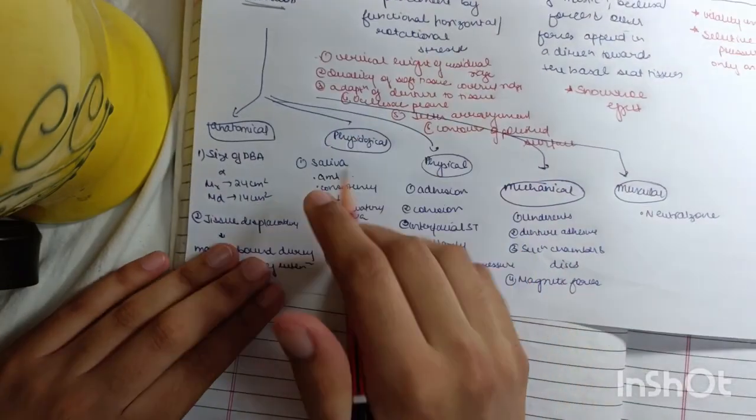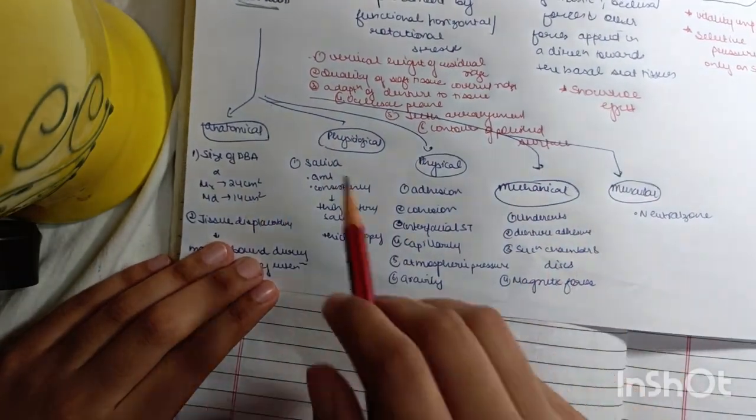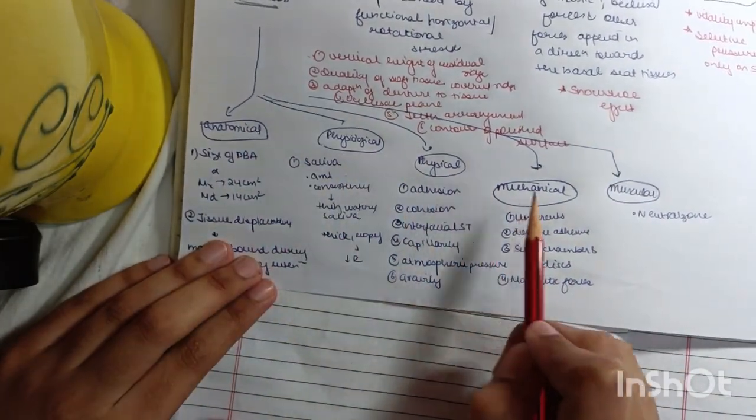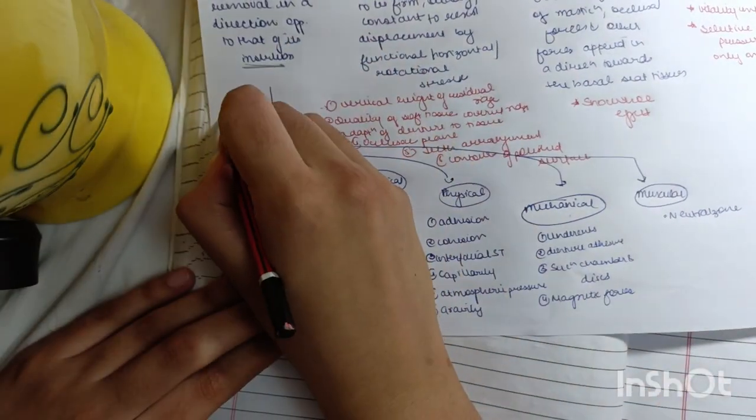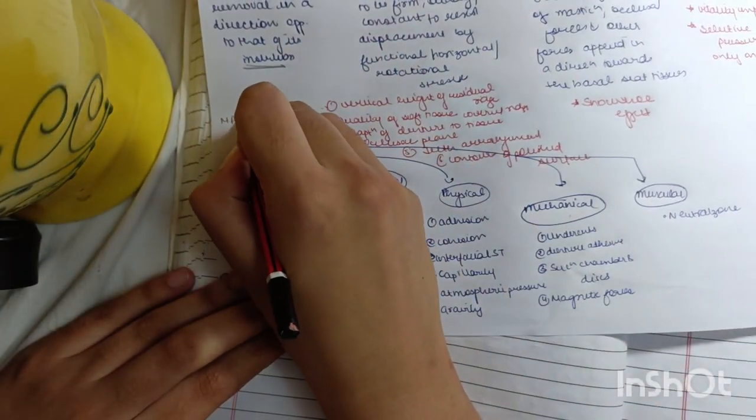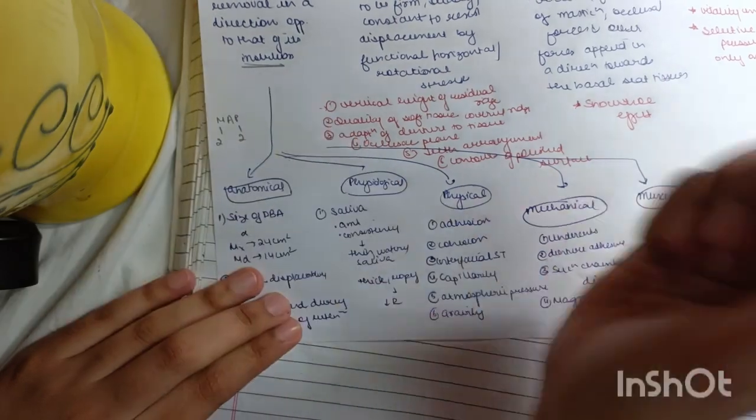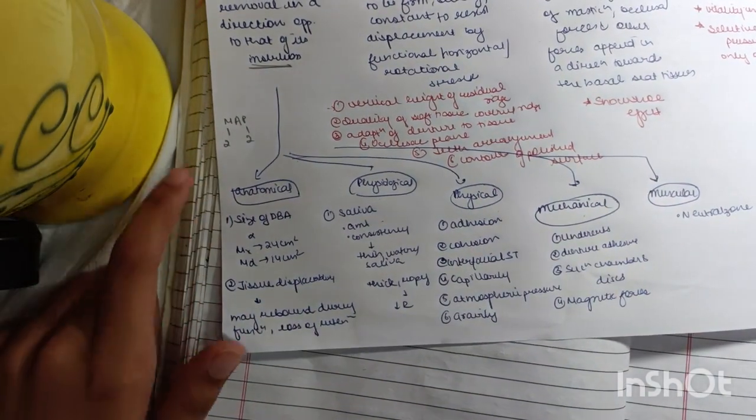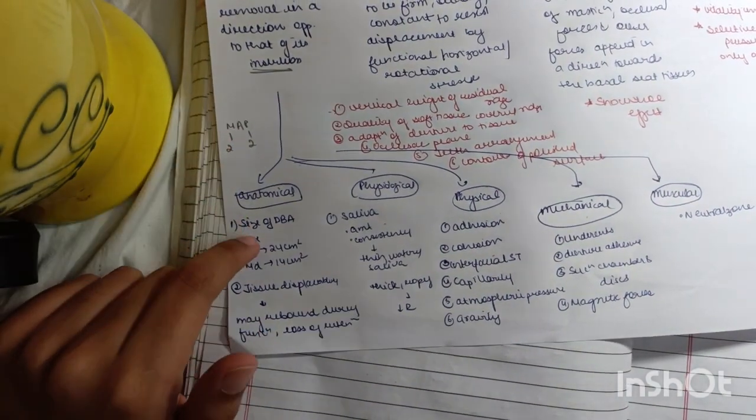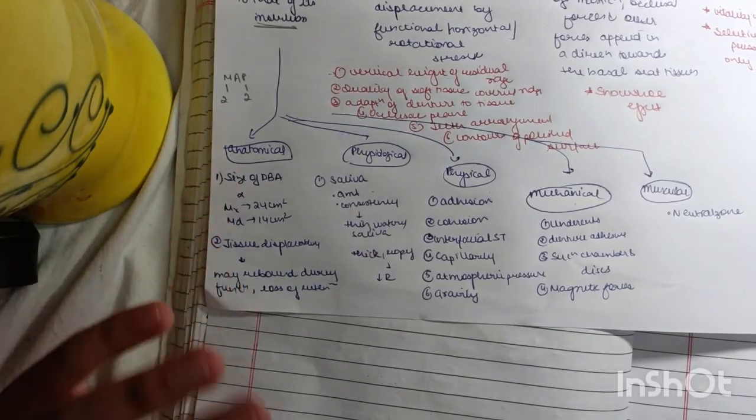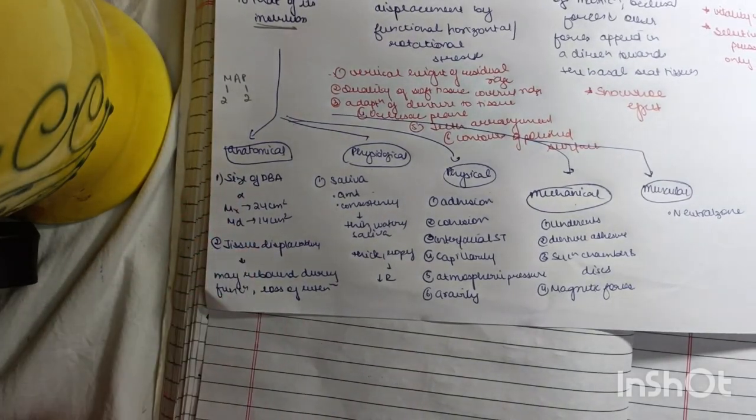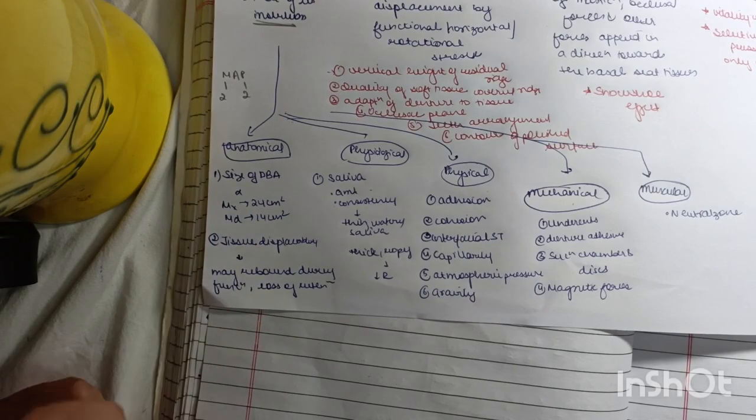Now you must remember five factors again: anatomical, physiological, physical, mechanical, and muscular. Remember something as MAP, but you have two M's and two P's. Coming on to the first one which is anatomical: size of the denture bearing area. Usually maxilla, it is 24 centimeter square and in mandible it is 14 centimeter square.